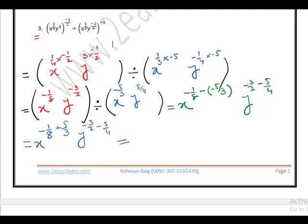Solve these. On this side solve minus 1 over 8 plus 5 over 3. It is equal to when we add these two fractions, 37 over 24. So x raised to power 37 over 24.